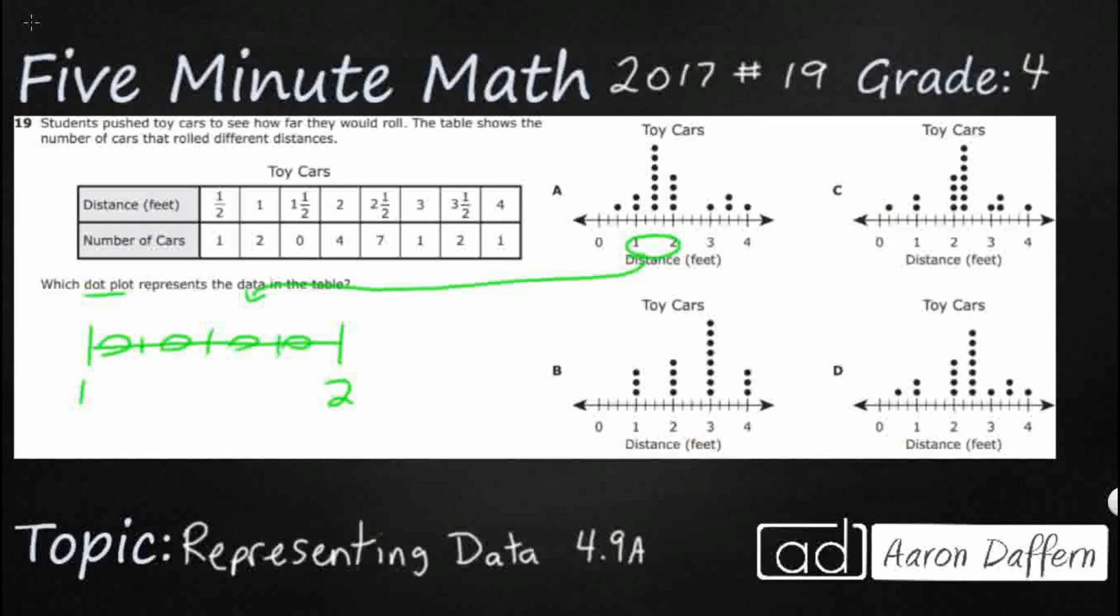So these are going to be fourths. So this first hash mark is going to be one fourth. So since it's between one and two, it's one and one fourth. This is two fourths, but since it's between one and two, it's actually one and two fourths. This is one and three fourths and that's two.